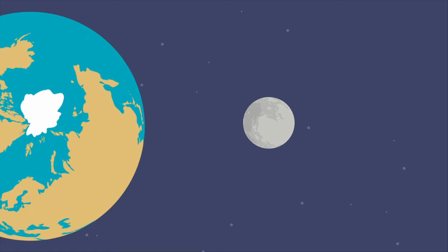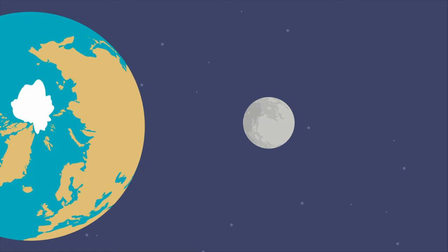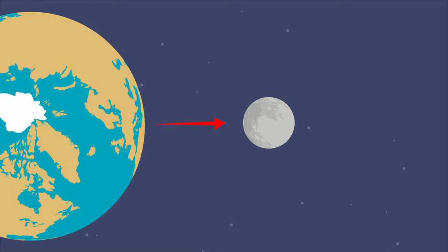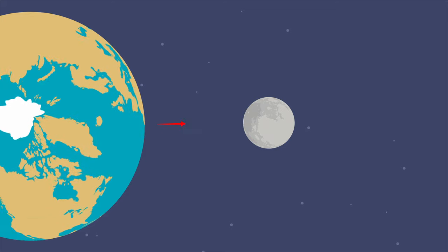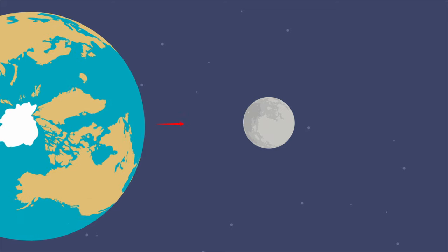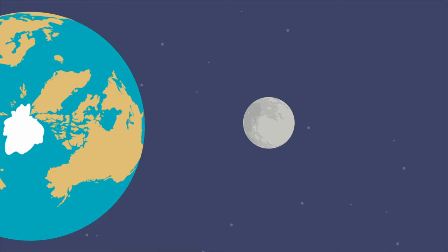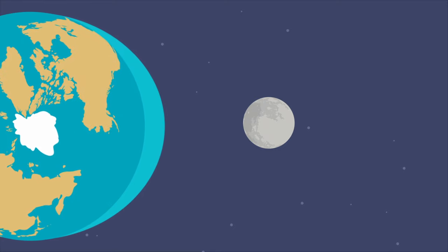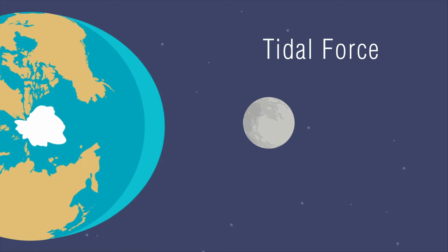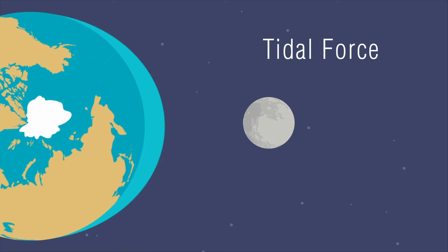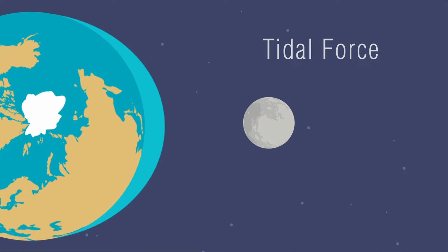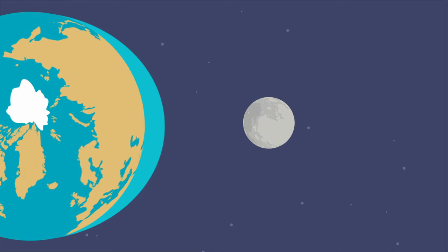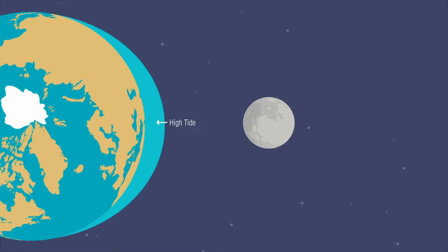The moon is a smaller object than Earth, so its force of gravity is weaker. But since the moon is so close, the pull of its gravity is still significant. As the moon's gravity pulls on Earth's water, the water bulges in the direction of the moon. This is due to something called the tidal force. Because of this tidal force, Earth's water on the side facing the moon always wants to bulge out toward the moon. This bulge is what we call a high tide.